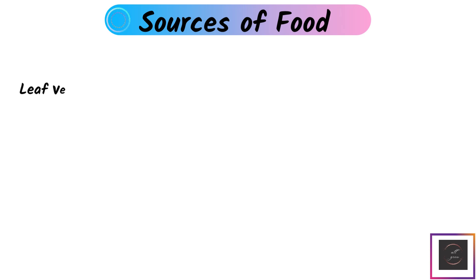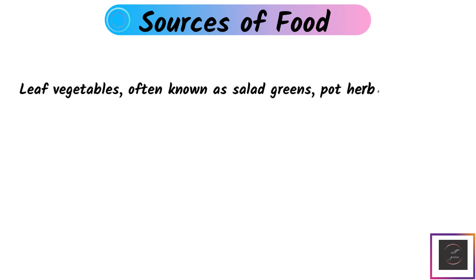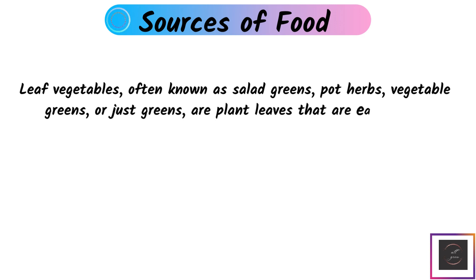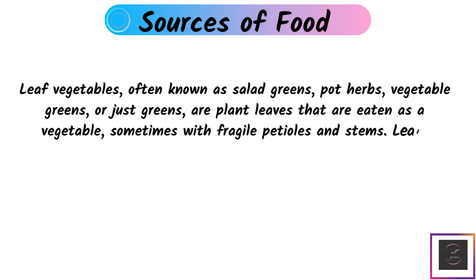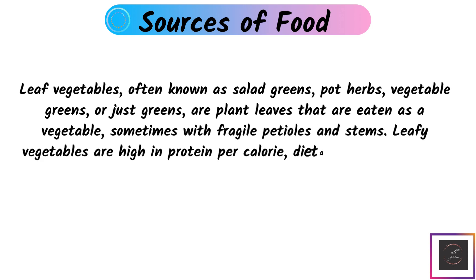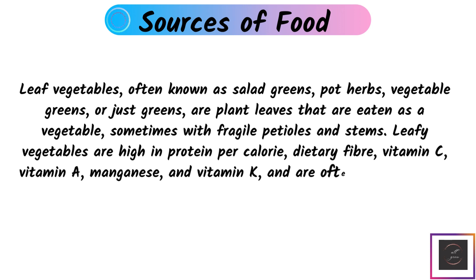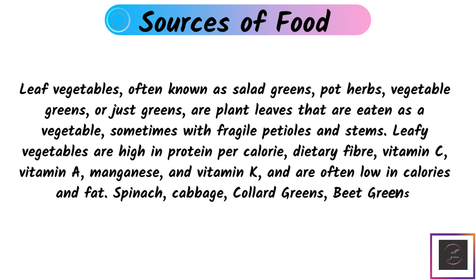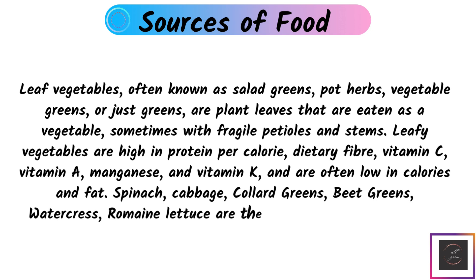Leaves: Leaf vegetables are often known as salad greens, potherbs, vegetable greens, or just greens. They are plant leaves that are eaten as vegetables, sometimes with a fragile petiole and stems. Leafy vegetables are high in protein per calorie, dietary fiber, vitamin C, vitamin A, magnesium, and vitamin K, and are often low in calories and fat. Spinach, cabbage, collard greens, wheat greens, watercress, and romaine lettuce are leaves that are eaten as vegetables.